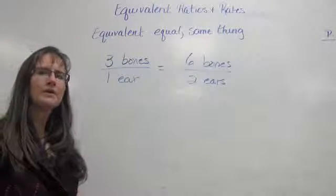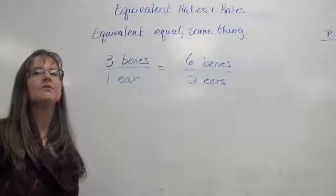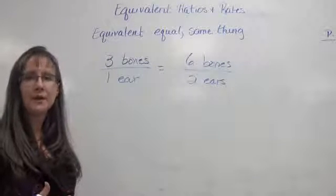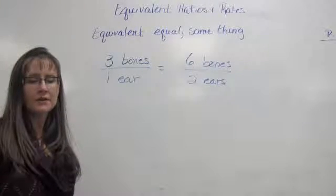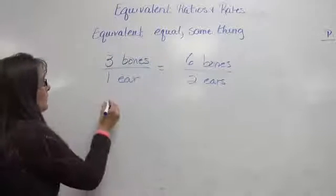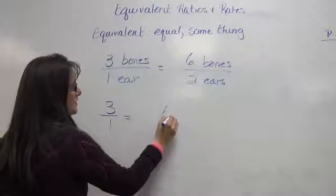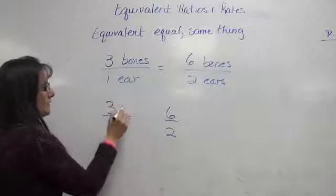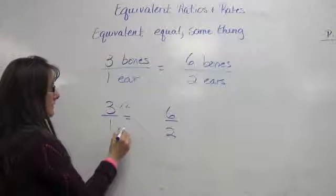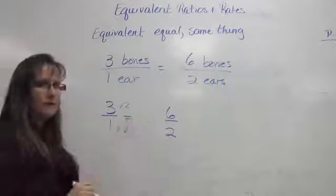You can find equivalent ratios or equivalent rates by the same process that you use to find equivalent fractions. That means you will either multiply the numerator and denominator by the same thing, or you'll divide the numerator and denominator by the same thing. When we went from 3/1 to 6/2, I multiplied the numerator by two and I multiplied the denominator by the same number, by two. And that's why I got 6/2.